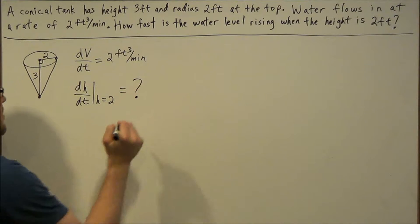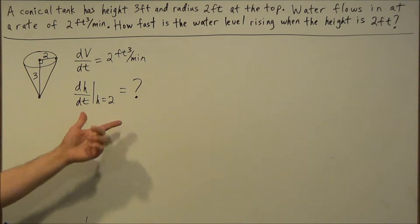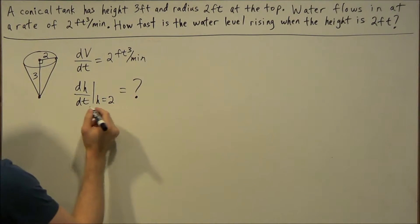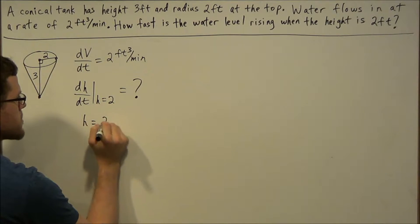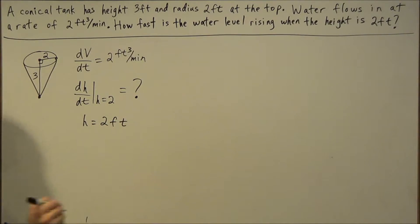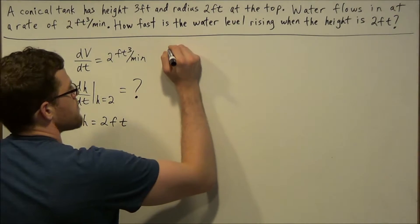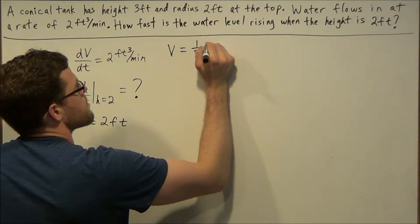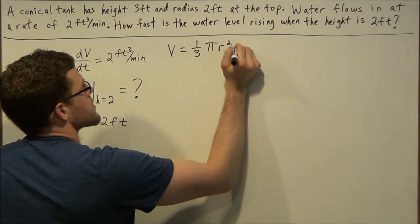If we restate the question, this is what we're looking for here. And we also know at height equals 2 feet, this is the data we're going to use at the end when we plug in. So for this example here, our primary equation is V = (1/3)πr²h.